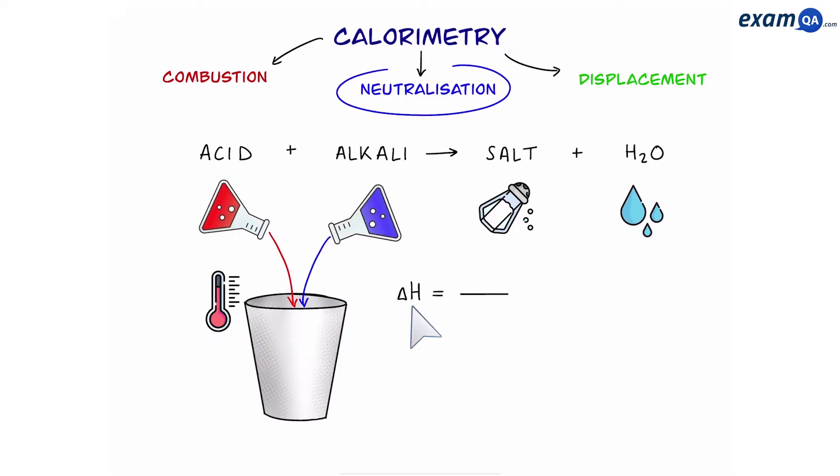So if we want to work out the enthalpy change for this reaction we have to first work out how much heat energy is released from the reaction. We can do this by using q equals mc delta t. Then we have to divide it by the number of moles. Now because we're doing neutralization it's going to be divided by number of moles of water produced. This is different to combustion where we divide it by number of moles of fuel.